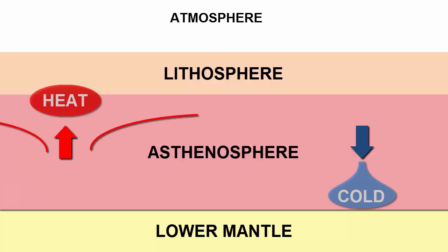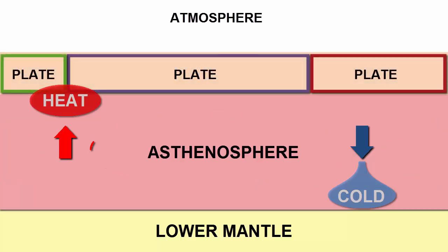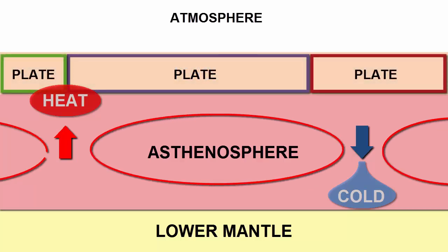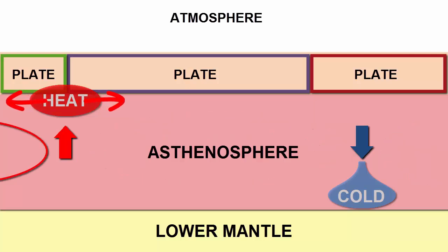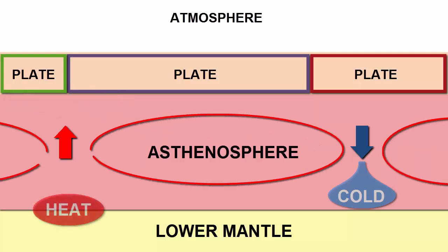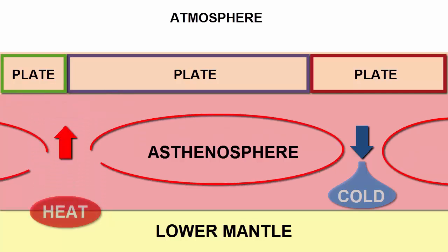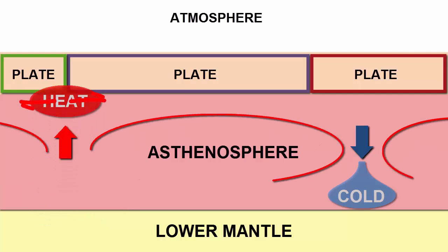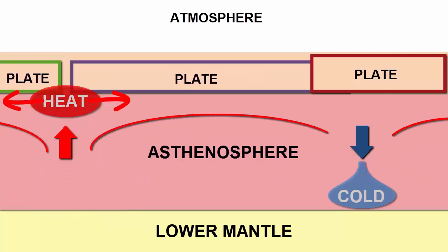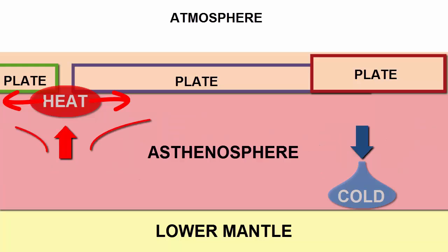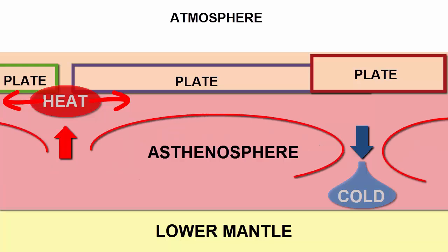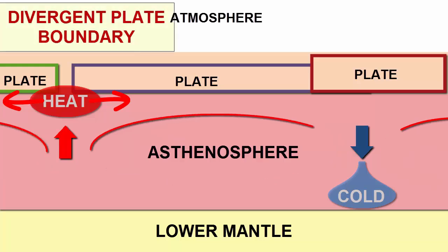What does that do to the lithosphere? It causes it to break into pieces we call plates. Where heat rises, material must be pushed away in opposite directions to make room for the continual rising of new hot material, much like boiling water. That drags on the lithosphere above and causes it to stretch and thin and break apart. On the surface, we call the zone where two plates are moving apart a divergent plate boundary.